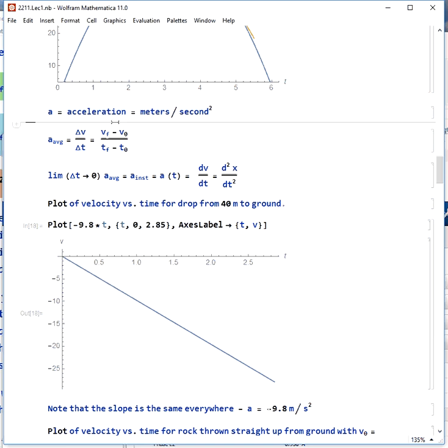The next kinematically interesting quantity is acceleration. The units of this are meters per second per second or meters per second squared. Here, our average acceleration is delta v over delta t, or v final minus v initial over t final minus t initial.